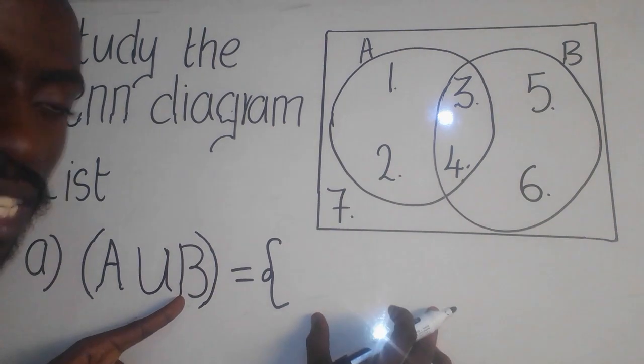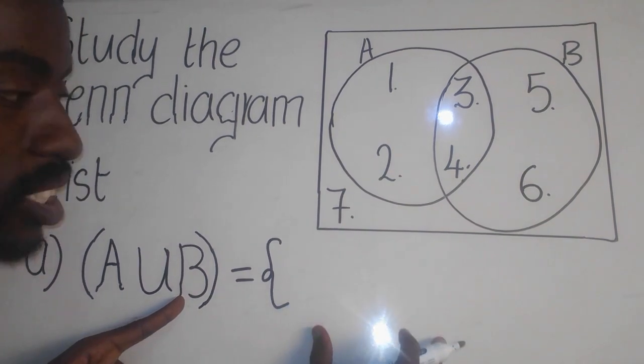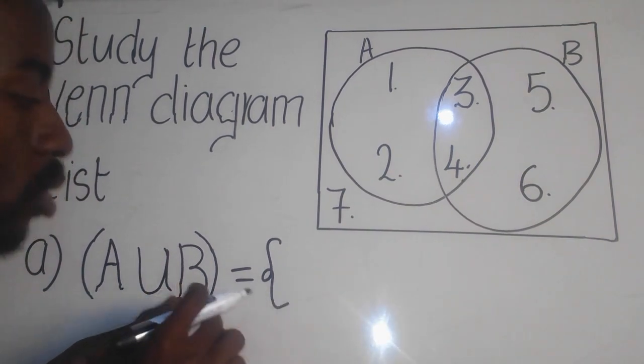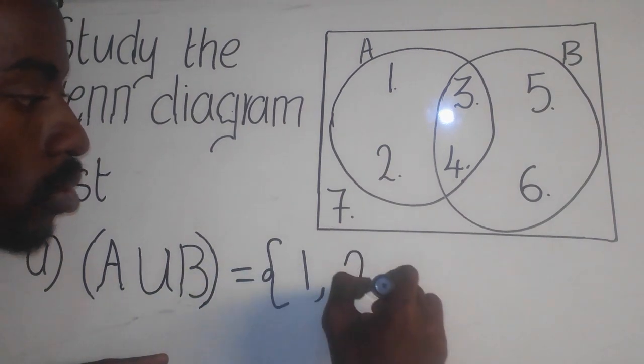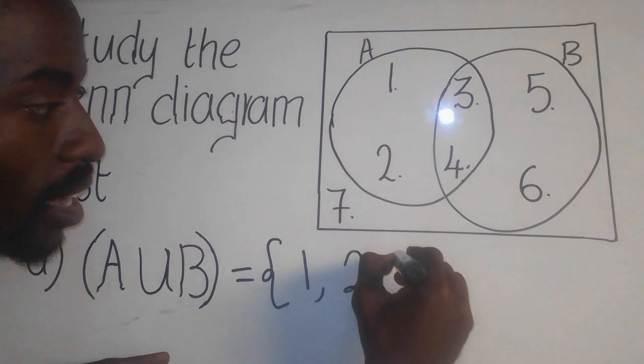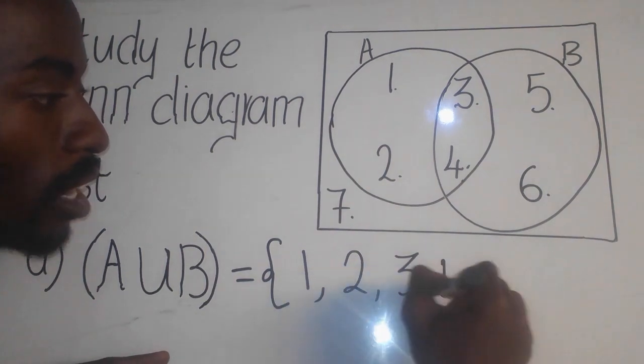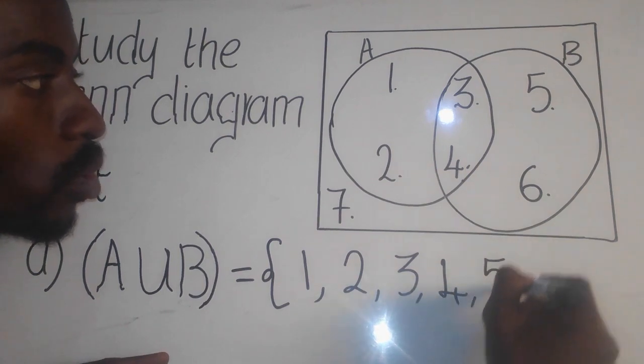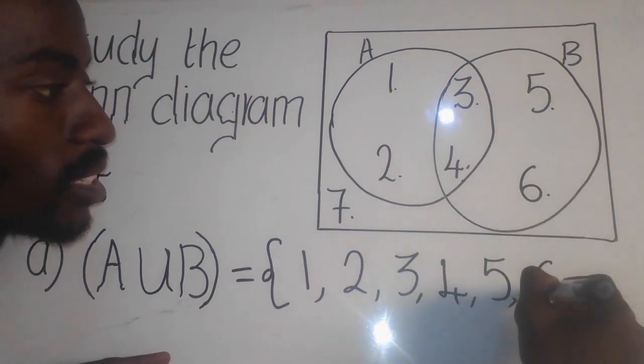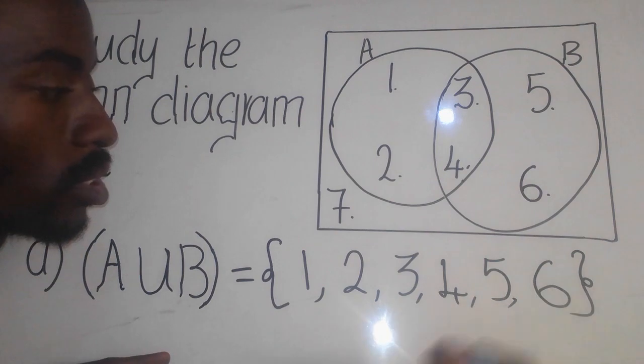Now, when it comes to listing, don't make the repetition here, okay? So the order of the set will be 1 there, comma, 2 there, comma, 3 there like this, comma, we have 4 there, comma, we have 5 there, comma, we have 6 there, and then we close the bracket. Thank you.